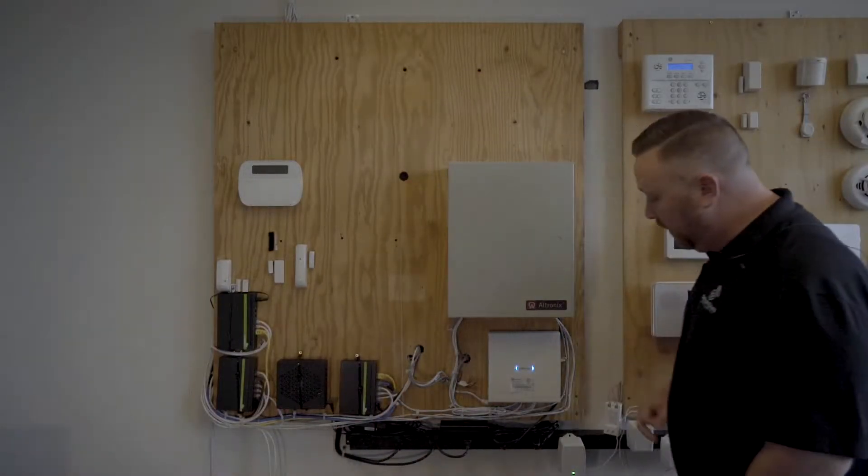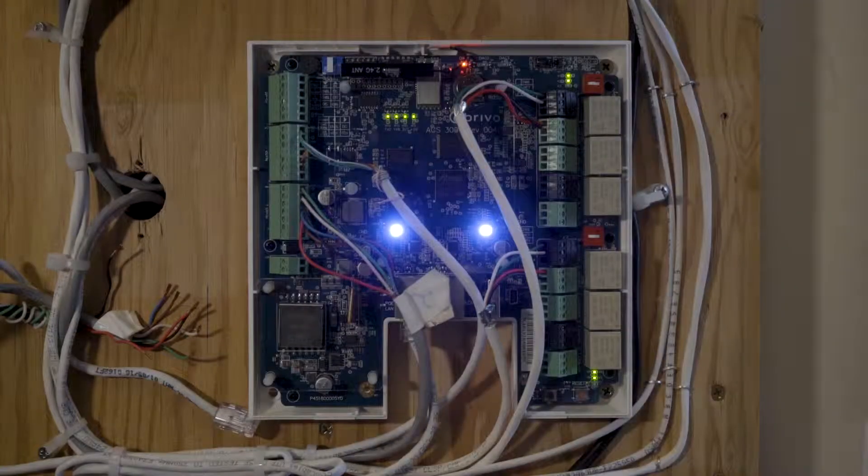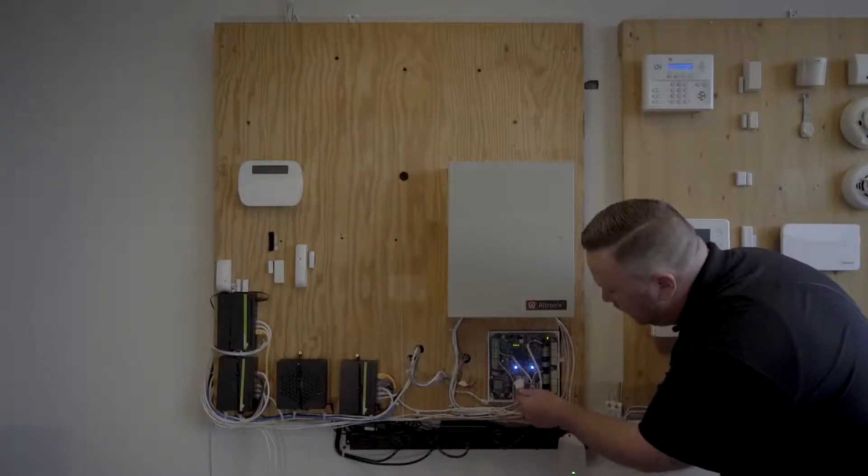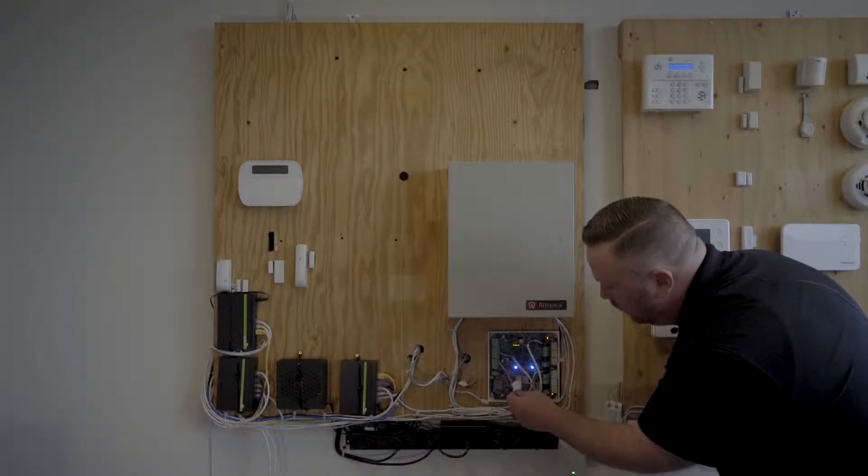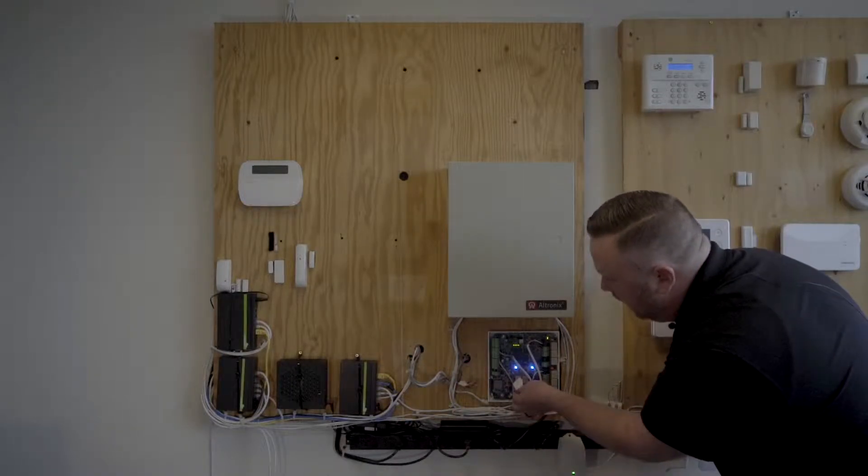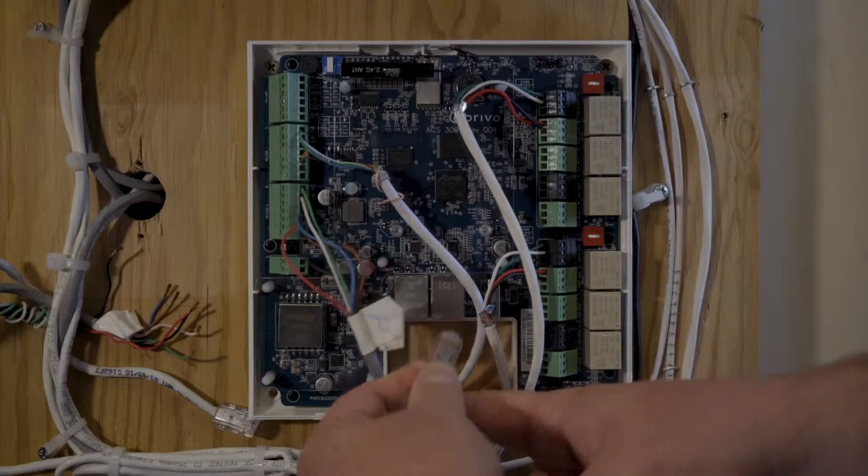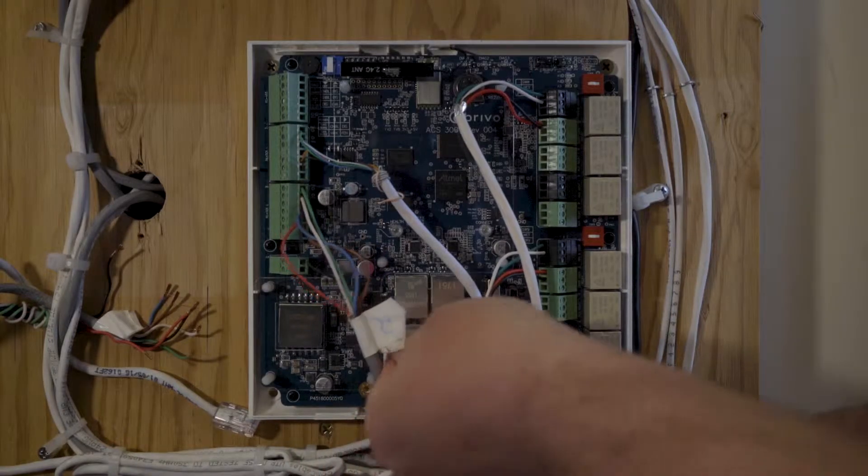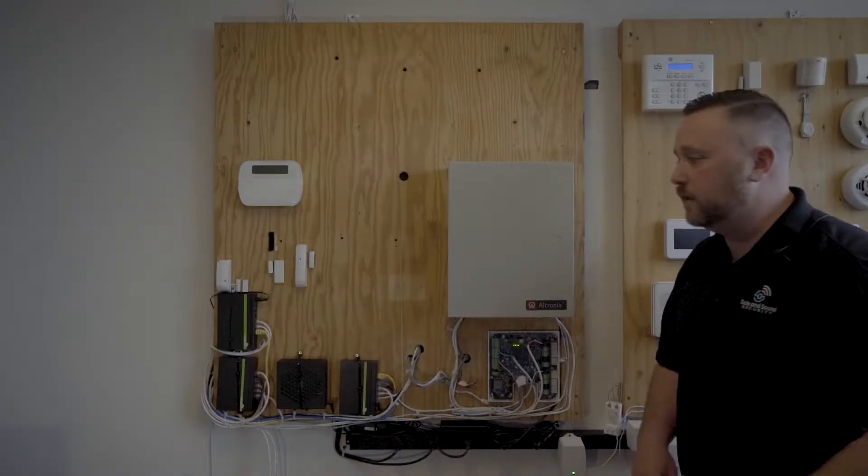It can be devices like our access control panel here. This is a Brevo two-door panel, and you'll see I actually have a Cat5 cable coming from here into one of my PoE switches that powers up this whole unit. You see, I unplug it, it goes off. Plug it in, I regain power back to the device.